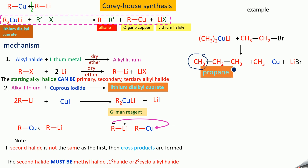Keep in mind that based on the product, you can select the reagent. For propane, you accordingly take ethyl bromide as the second alkyl halide, and the remaining part is taken as the reagent. This is Corey-House synthesis, by which you can prepare an alkane with any number of carbon atoms. Now, how to prepare the lithium dimethyl cuprate reagent?